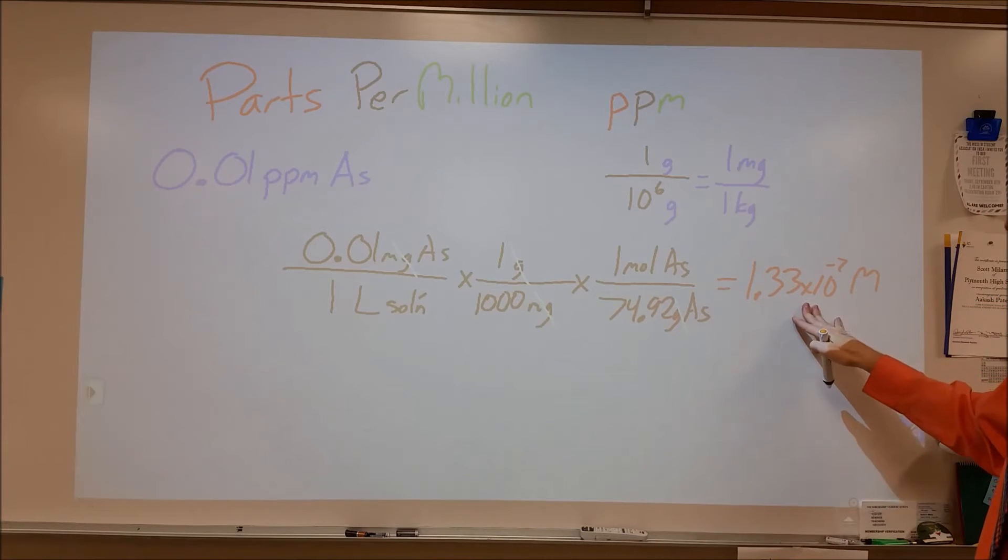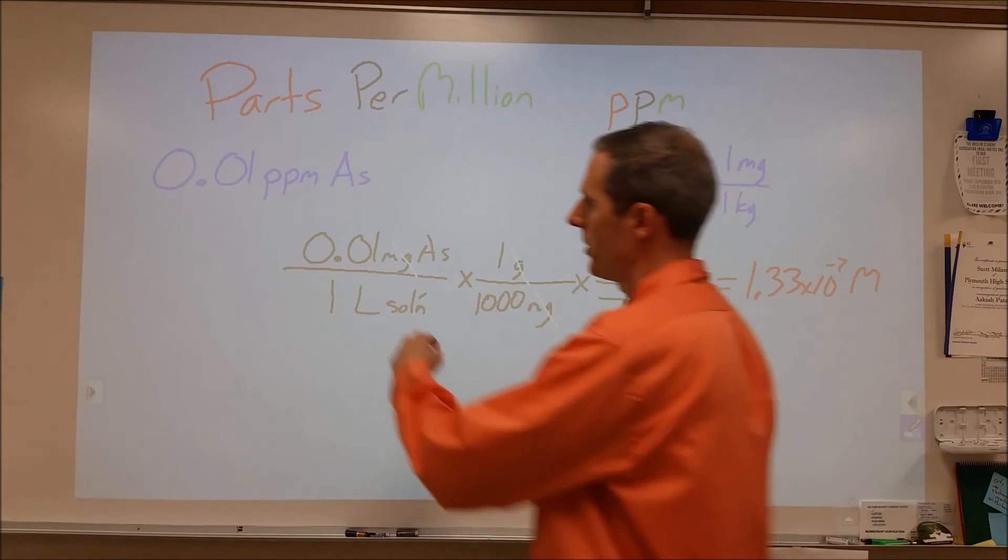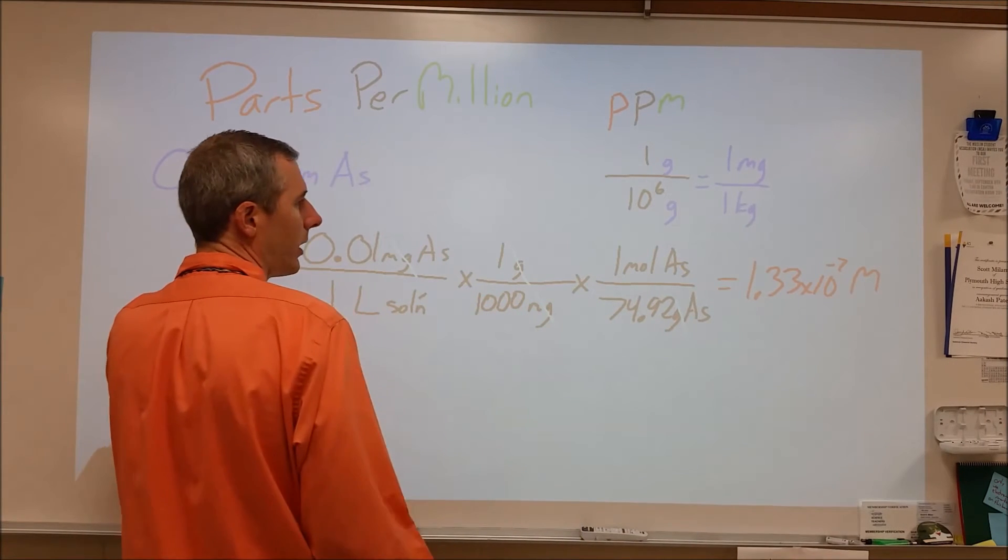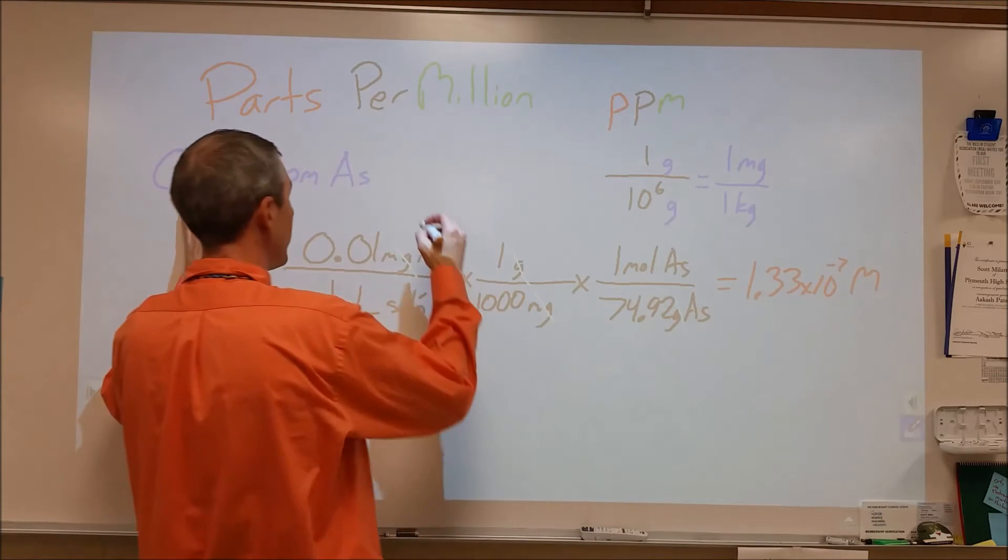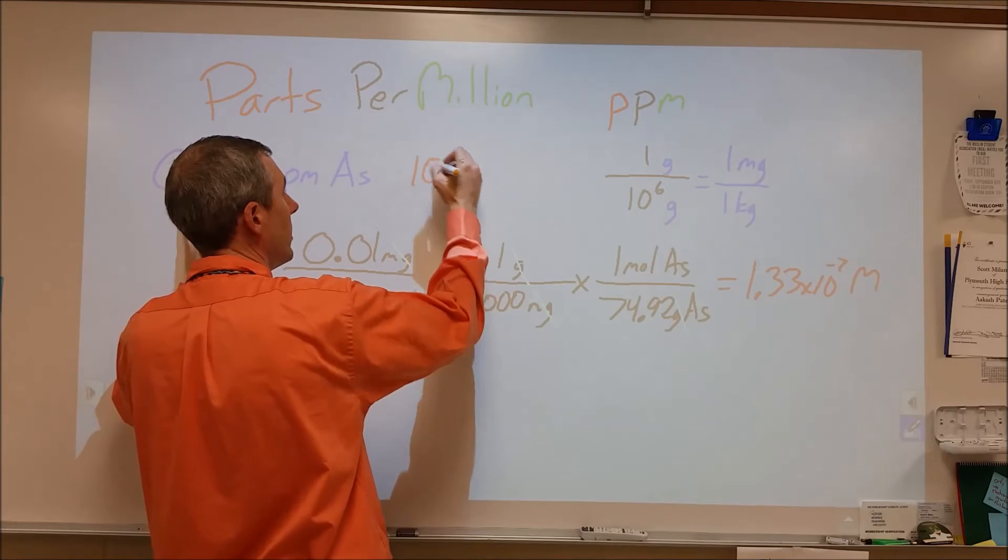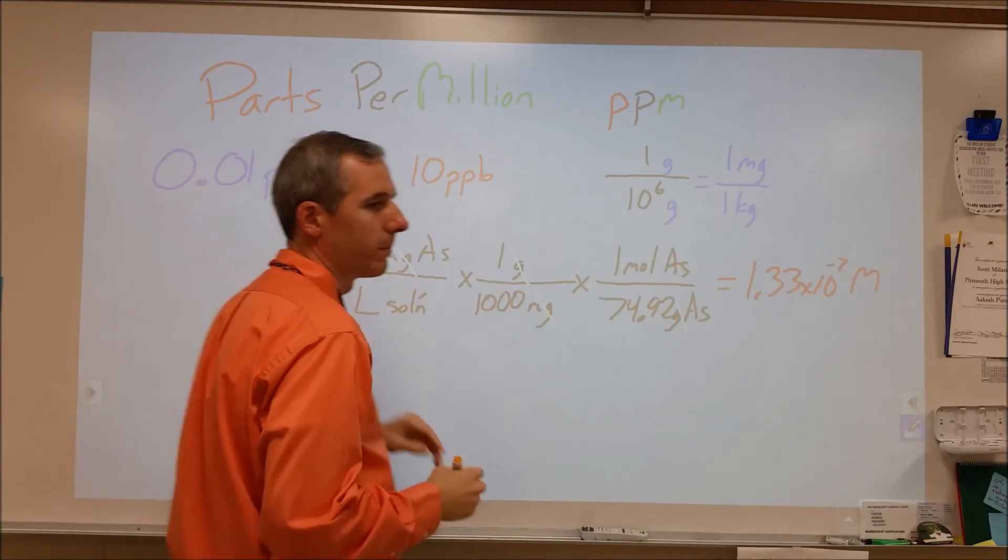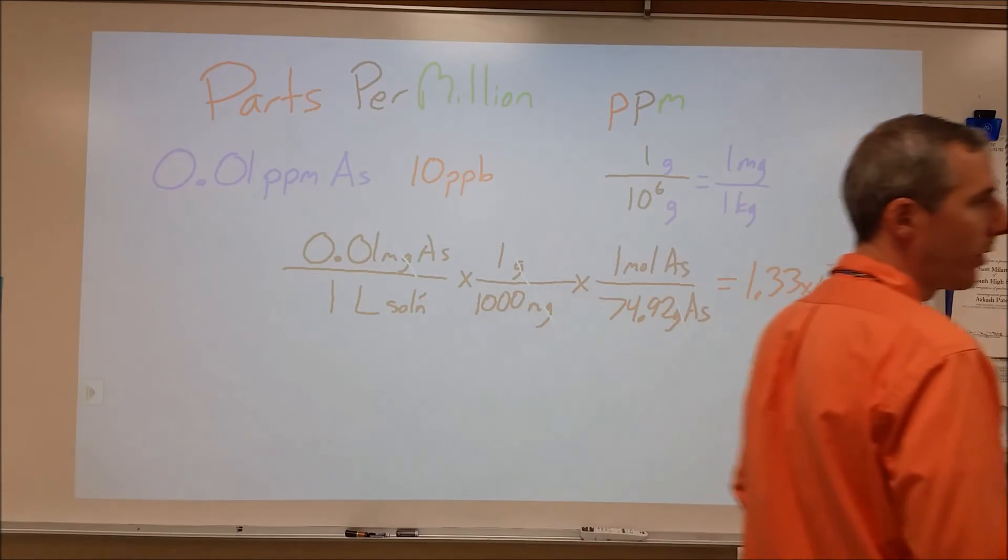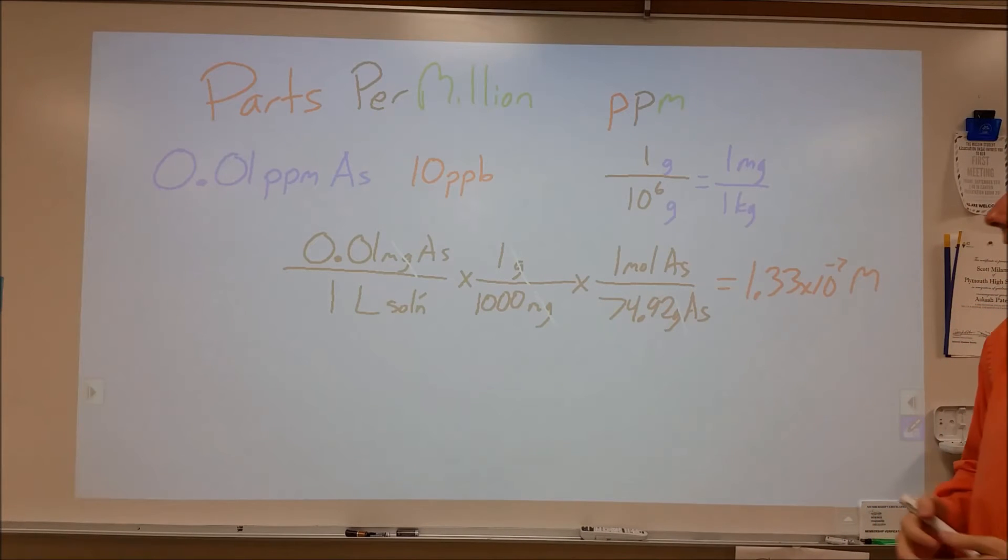Which is a very small number. Looking at 0.00000133 molar, it's much easier for us to talk about it in terms of parts per million at 0.01. Additionally, we can also write this as 10 parts per billion, where it would be 1 gram per billion grams, and therefore it would be a thousand times greater.